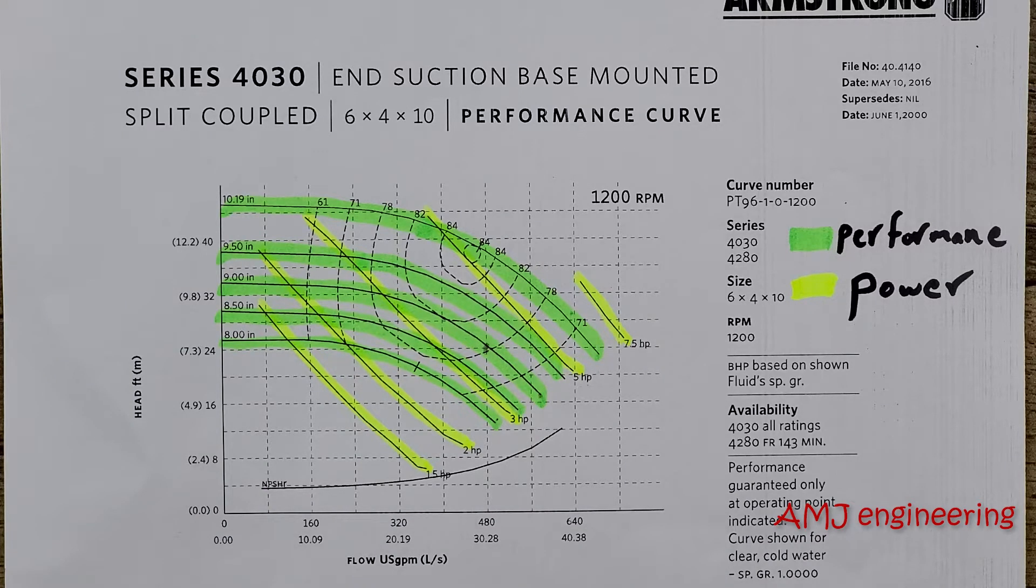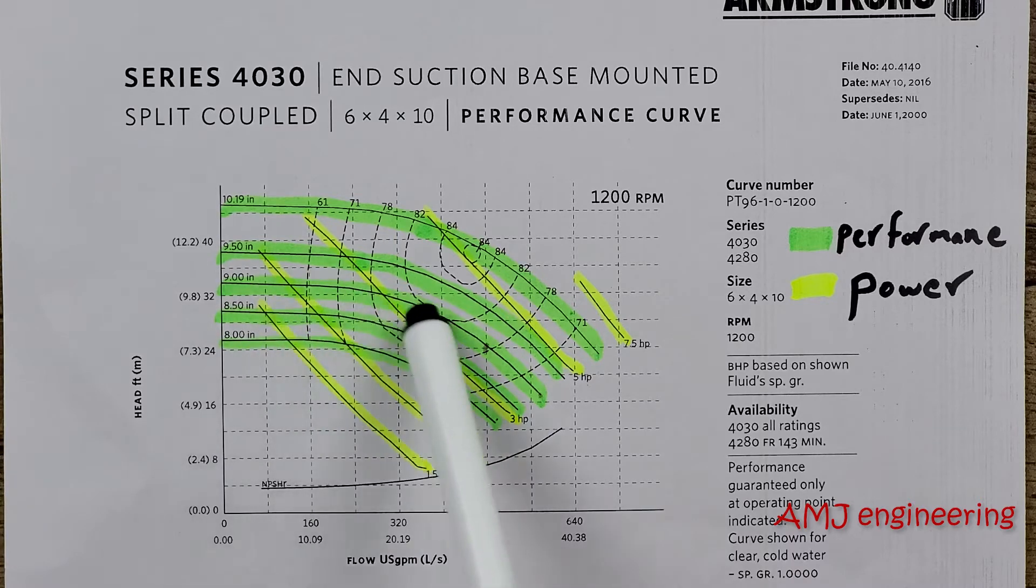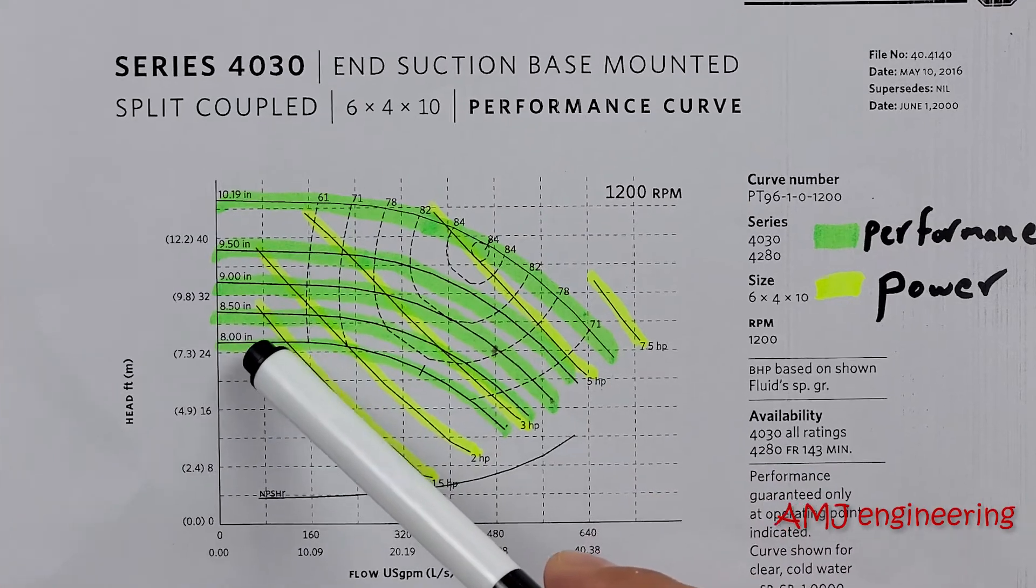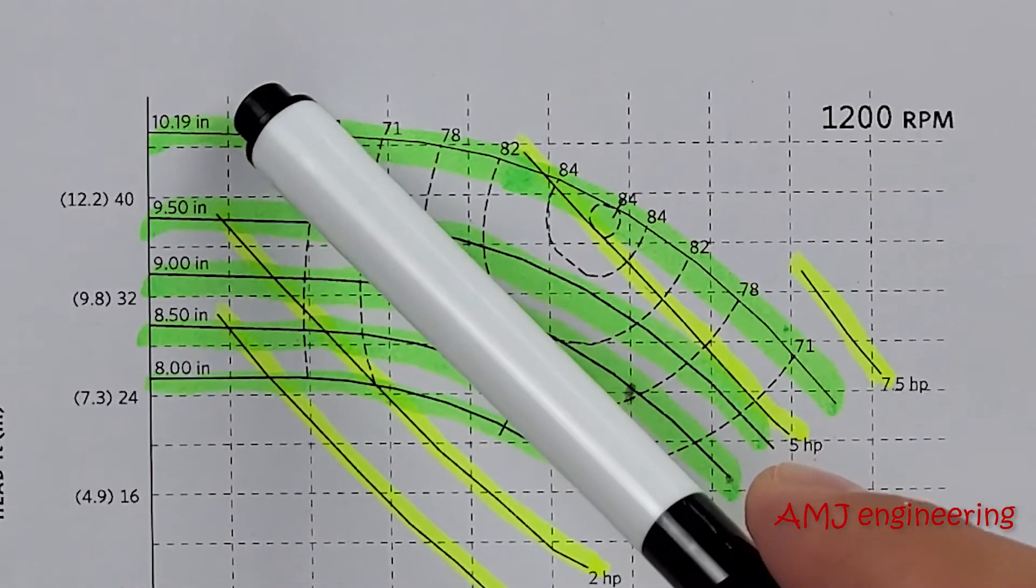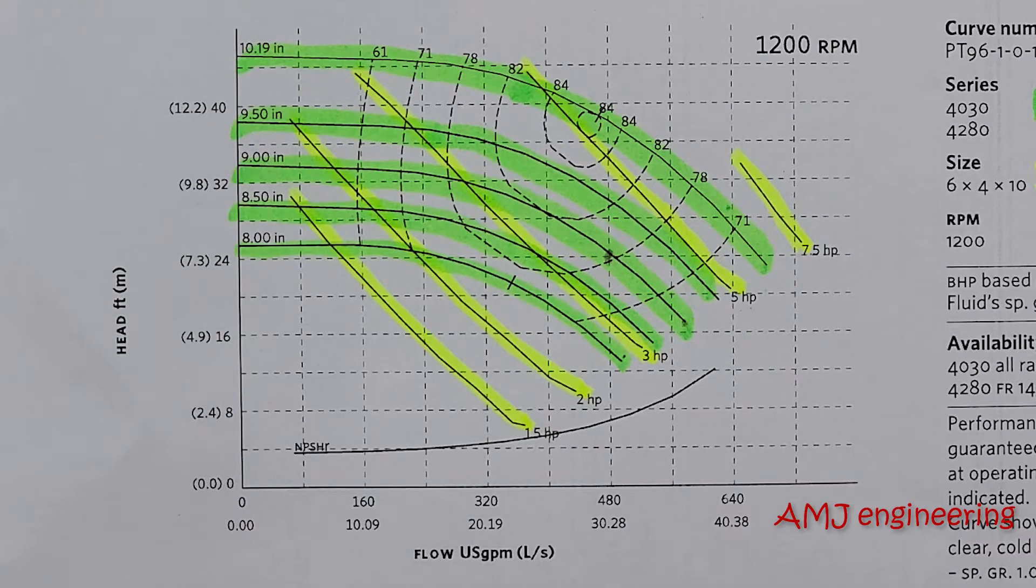Several curves on one chart indicate the performance for various impeller diameters. In the example here, the impeller size ranges from 8 inches to 10.19 inches. These curves also tell us the possible conditions that the pump could be modified to meet in the future by installing a different impeller size.